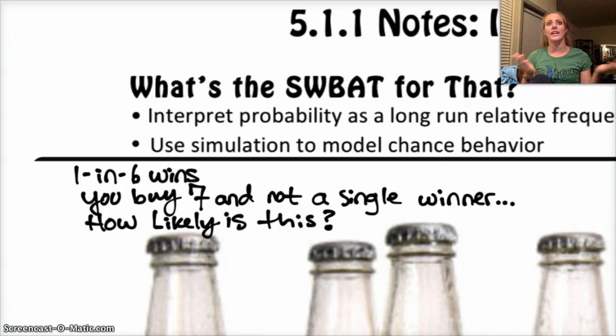So we've got one in six wins, you buy seven and not a single winner. We want to know how likely this is. So you're a genius statistician and you just happen to carry a die with you everywhere you go. What you decide to do is show the store attendant that you should have won. You have a die, and there are six options on a normal die. If it's a fair die, the probability of each number being selected is the same. If we know that one in six wins, then we should assign a number from the die to represent a winner, and then the rest be losers.